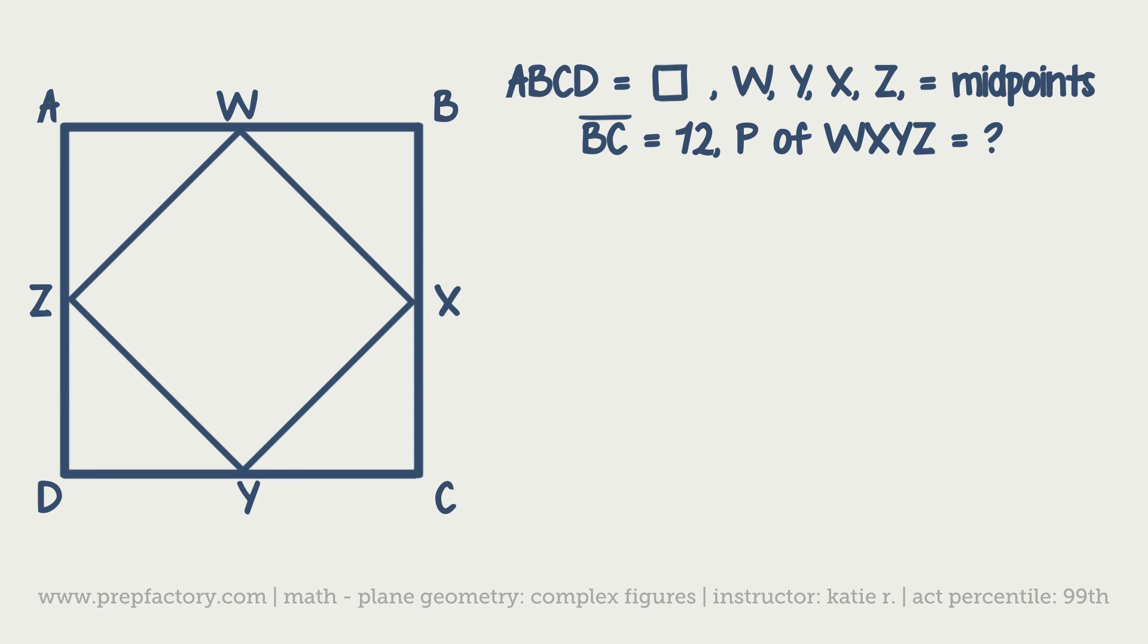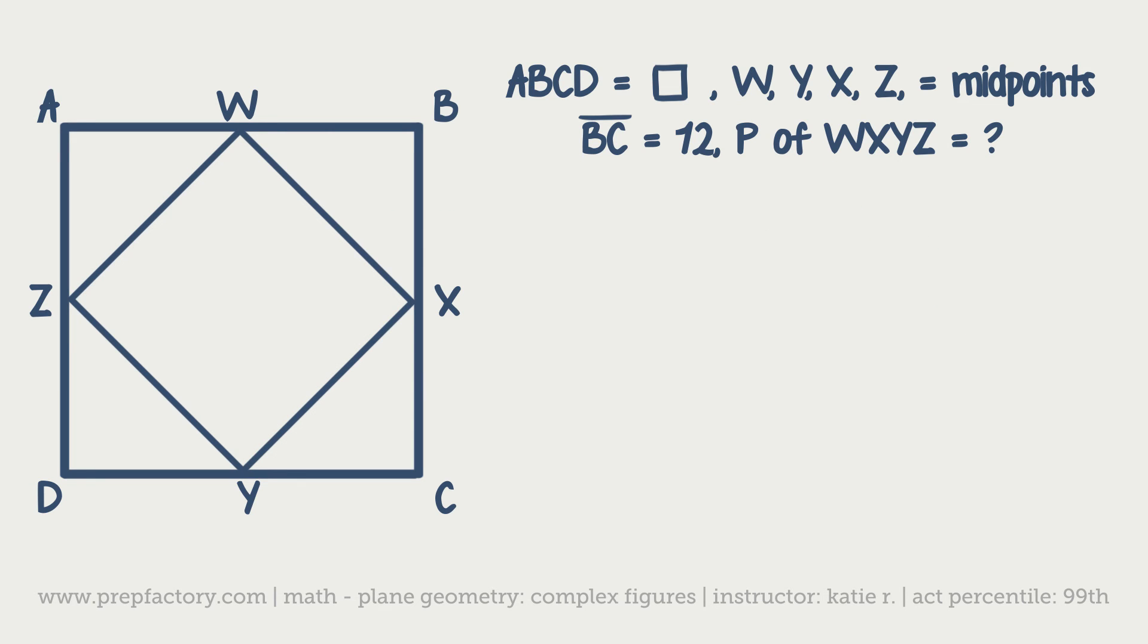Here's a pretty normal complex figure problem. As you guys can see, you can kind of break this down to lots of different shapes, but it looks like two squares: ABCD being one and WXYZ being the other. You also can see triangles, so for instance AWZ is a triangle as is XCY. There's a lot of different shapes in here, but they're all pretty much basic shapes.